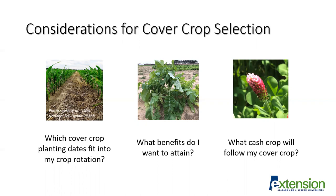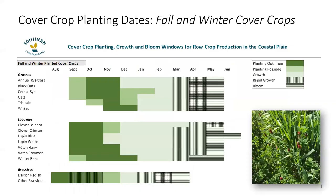Lastly, what cash crop will follow my cover crop? This is important because certain covers can actually negatively impact the growth of a cash crop. For example, if we're growing a legume cash crop, we don't want to plant a legume cover crop before it, because planting a legume in rotation with a legume can promote disease cycles and inhibit the rhizobacteria that help legumes fix their own nitrogen. In certain cases, there can also be allelopathic effects of a cover crop residue on the following cash crop — meaning the plant itself may cause harm to the subsequent crop. An example would be planting corn following ryegrass, which, as opposed to cereal rye, has an allelopathic effect on corn.